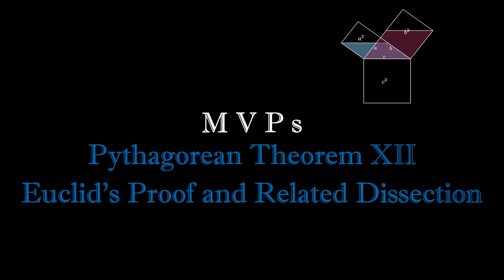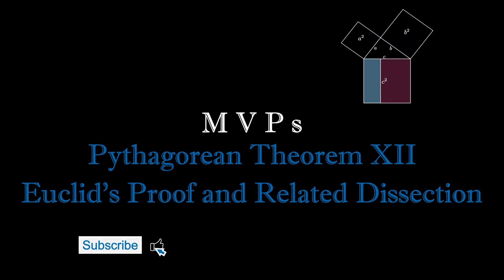Let's see two proofs of the Pythagorean Theorem inspired by Euclid. Imagine that we have a right triangle with legs of length A and B and a hypotenuse of length C.